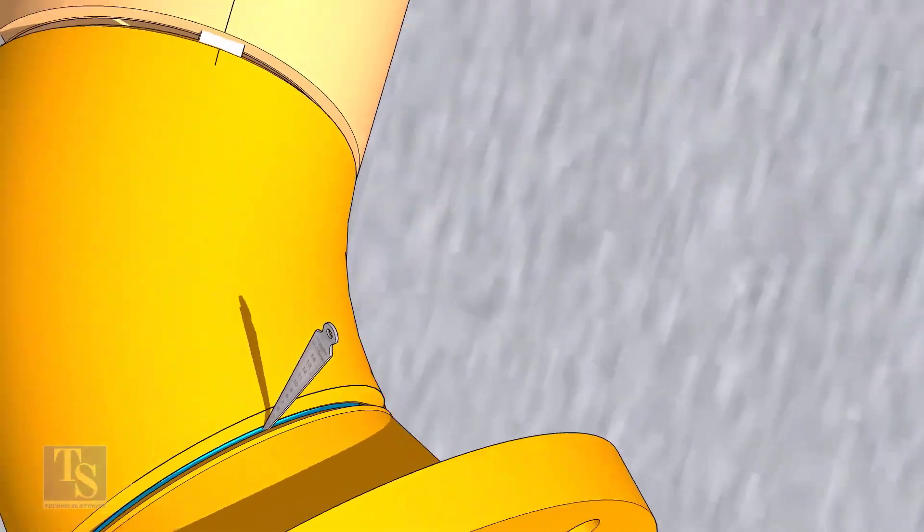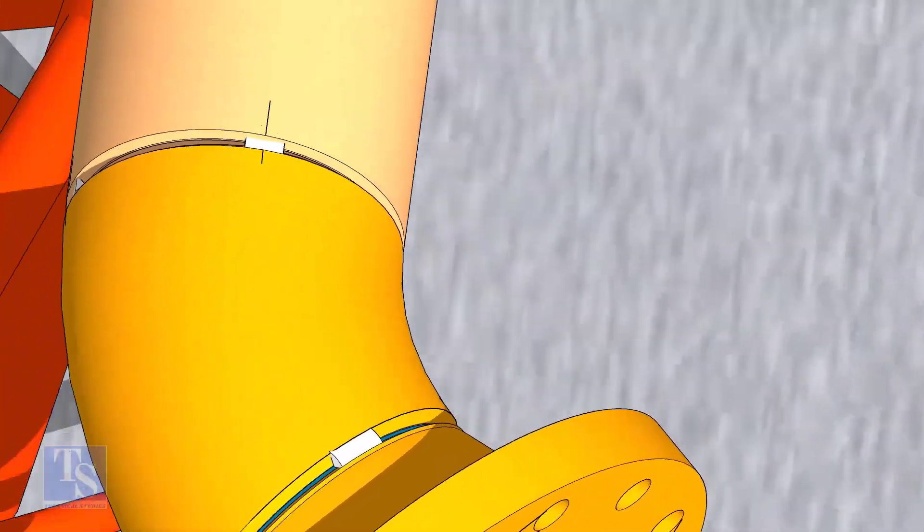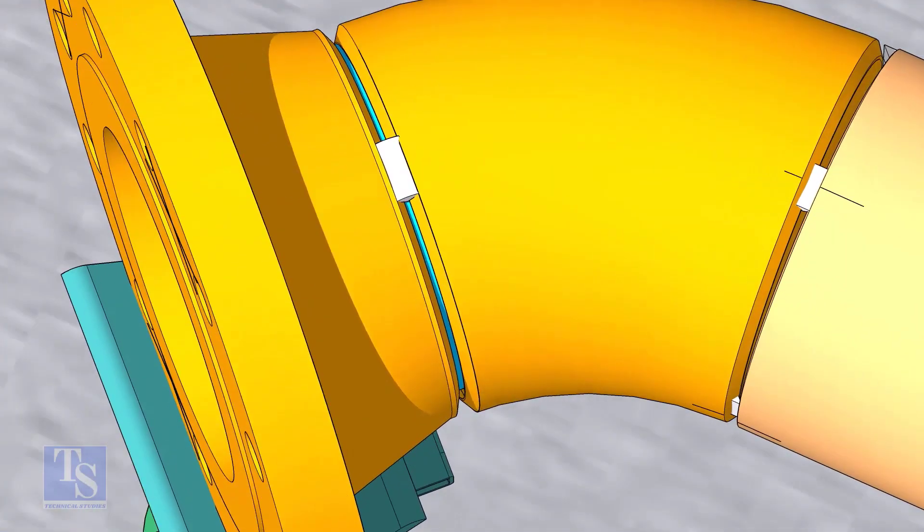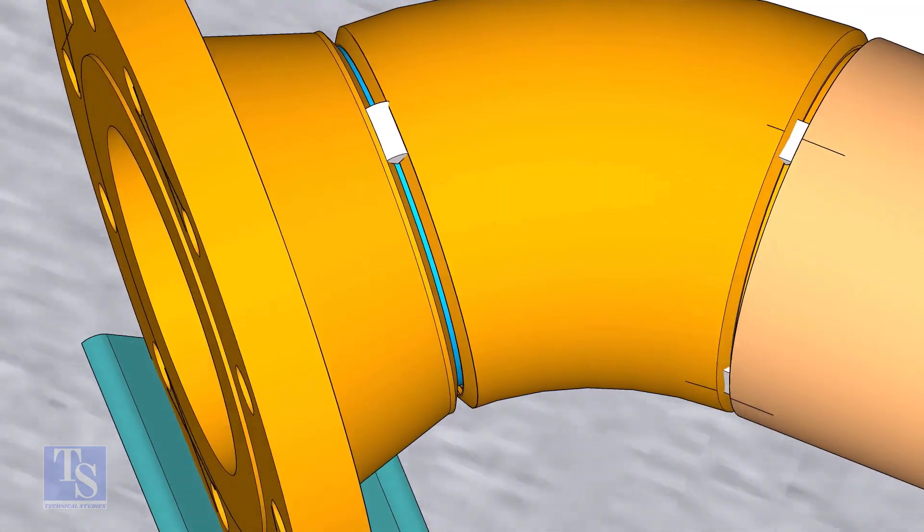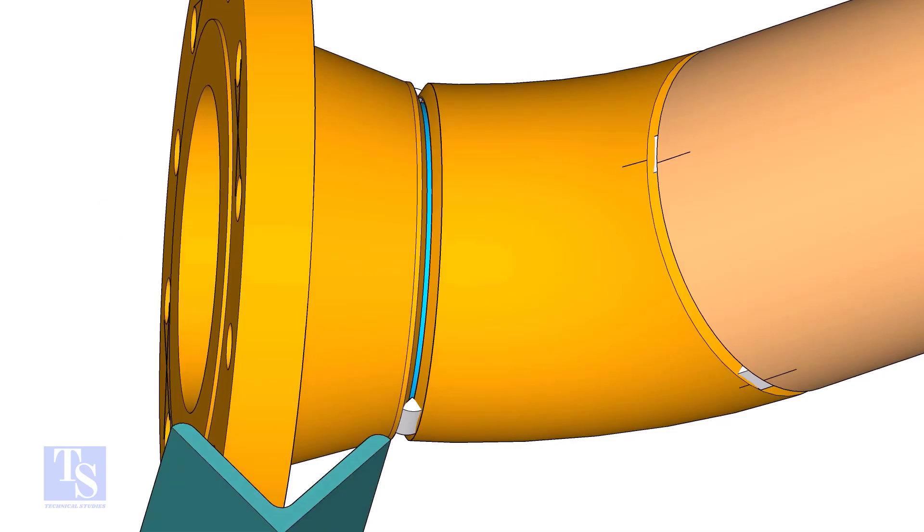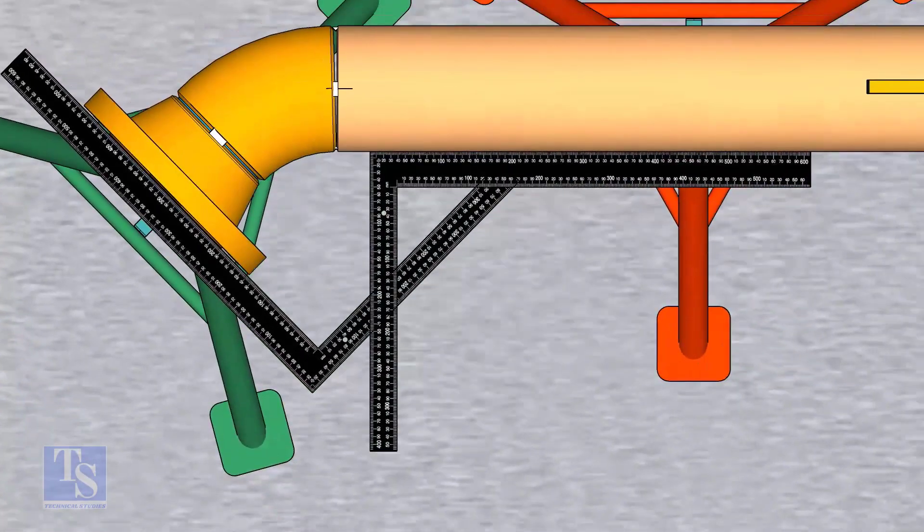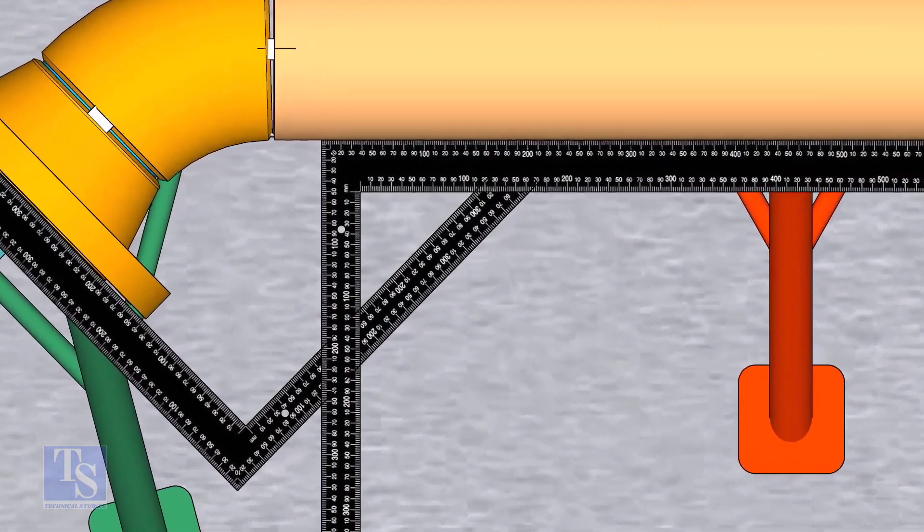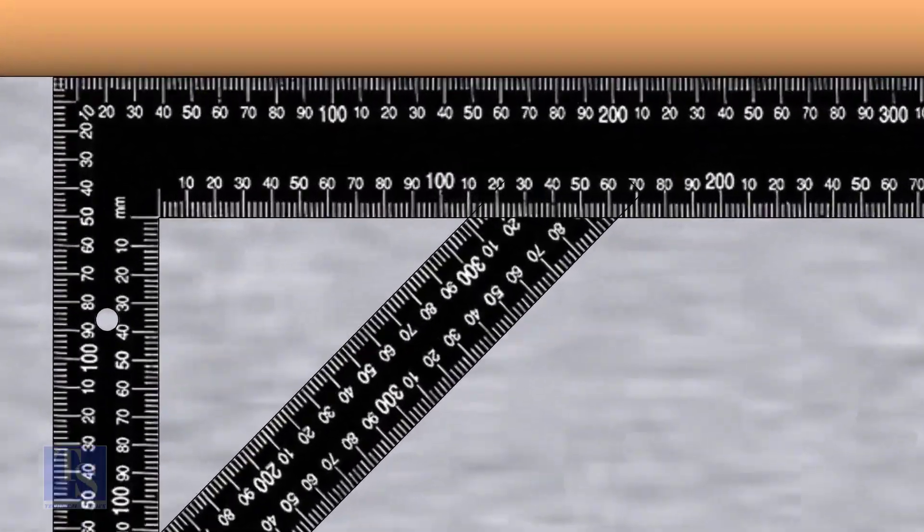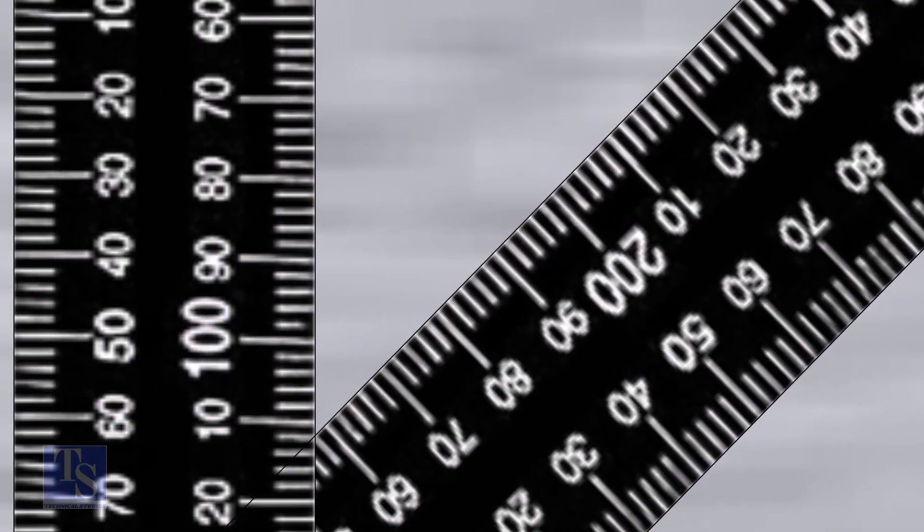Tack weld on the top and bottom sides of the joint. Check the degree of the flange face to the pipe. Tack weld on both sides of the joint.